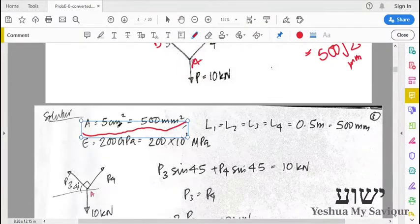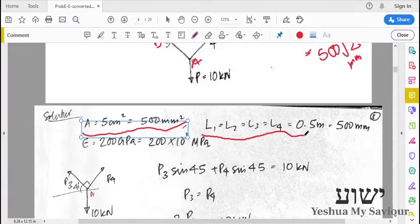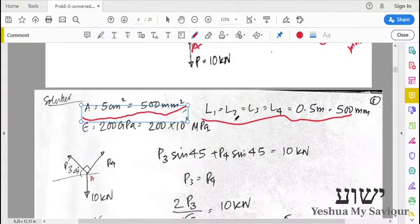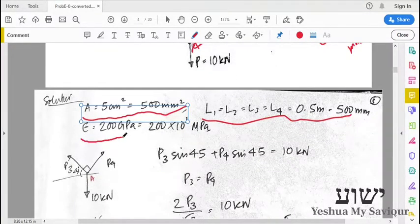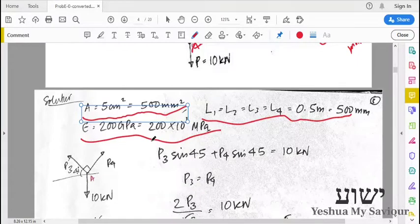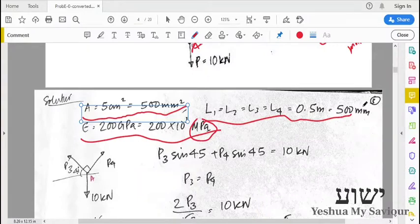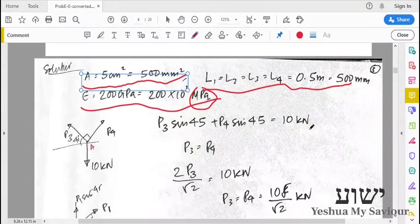The area is equal to 500 millimeter squared. The length L1, L2, L3, and L4 is 500 millimeters. Young's modulus is 200 GPa or 200×10³ MPa. We will be converting everything into newtons and millimeters. We want the deflection in terms of millimeters, so we will be using megapascal, newton, and millimeter.